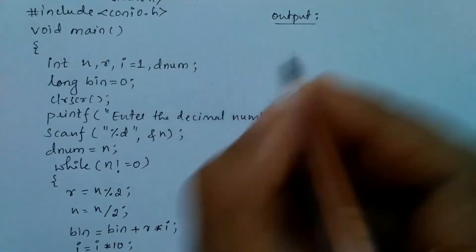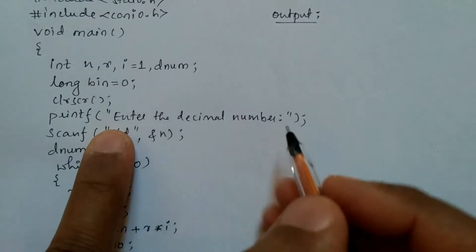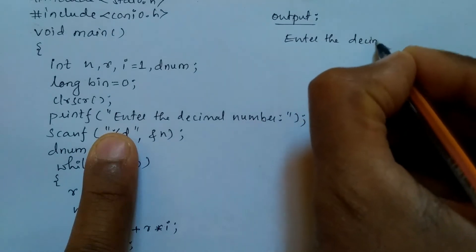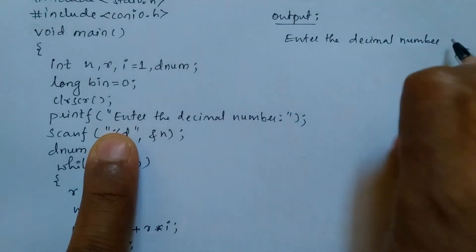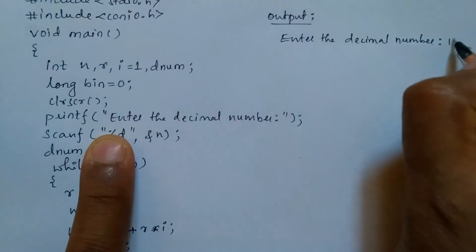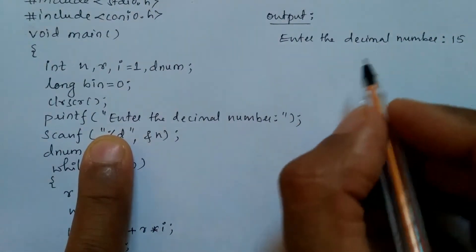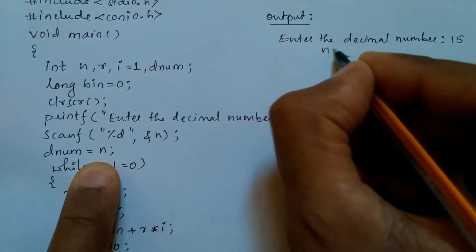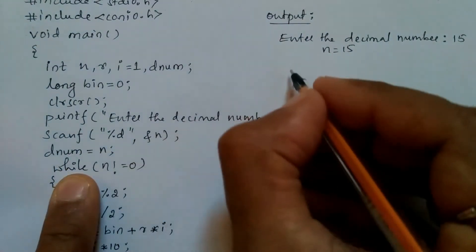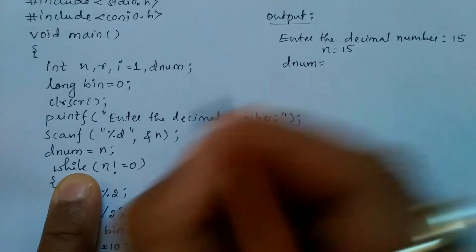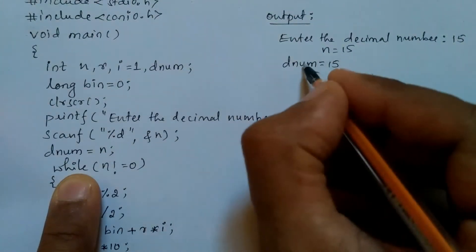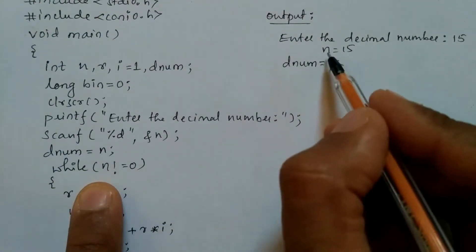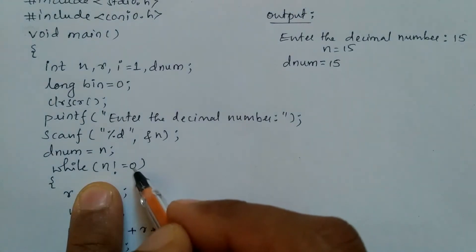Let us trace through an example. When compiled and run, the program asks the user to enter a decimal number. For example, let's enter 15. So n equals 15, and denum is initialized to n, so denum equals 15. The while condition checks: 15 is not equal to zero, so it is true and control enters the loop.